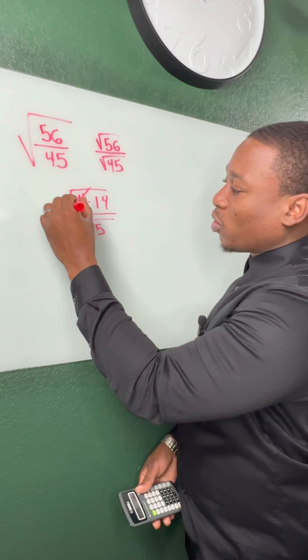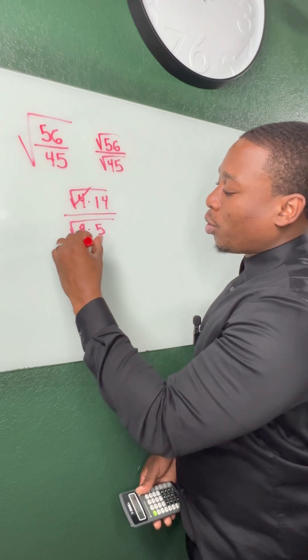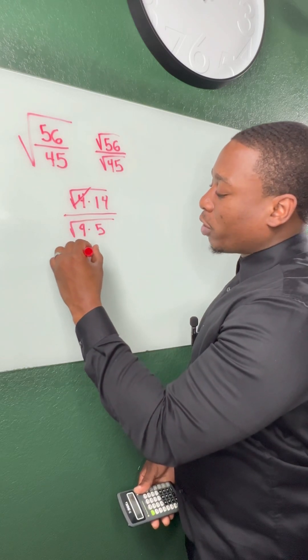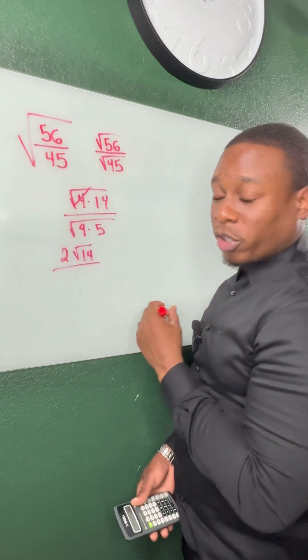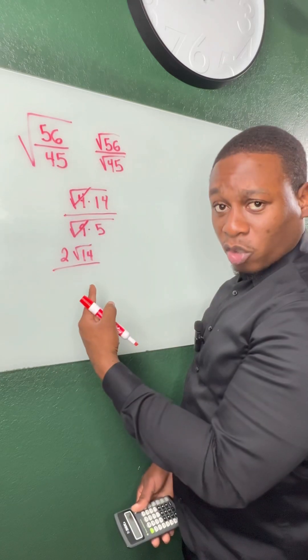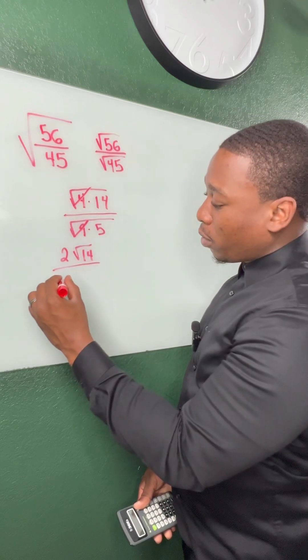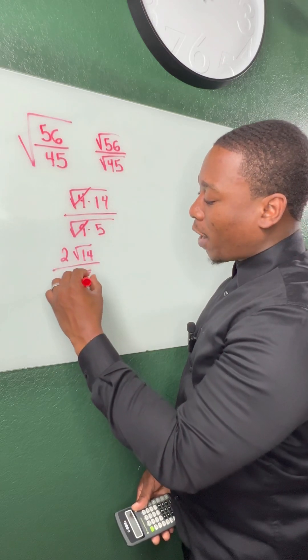When we simplify, the top is going to turn into 2 radical 14, and then the bottom expression — when we take the square root out — becomes 3 radical 5.